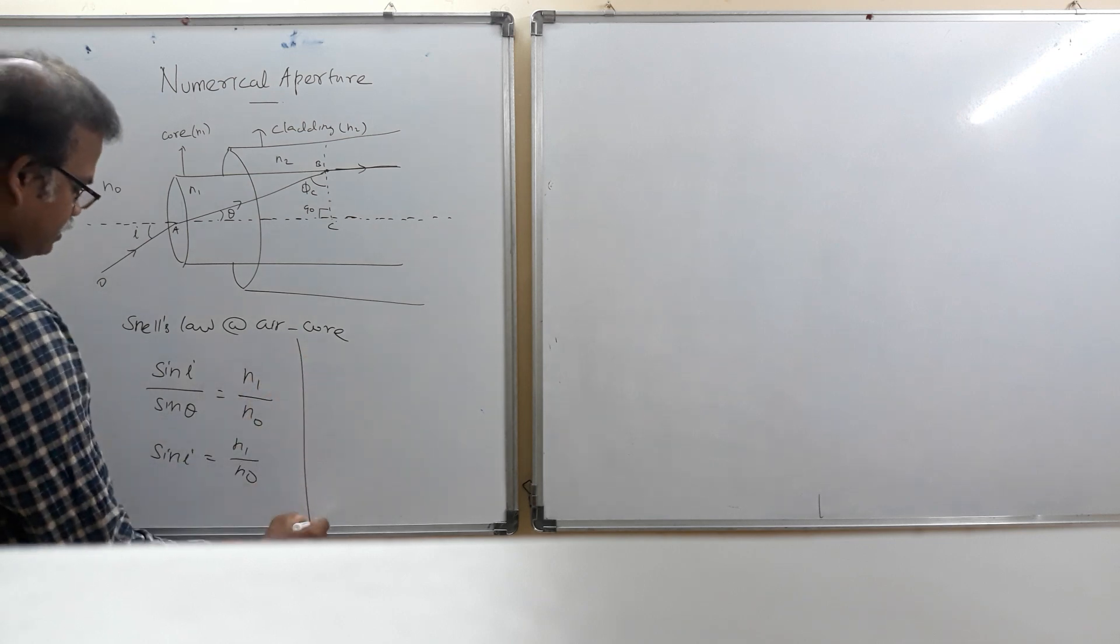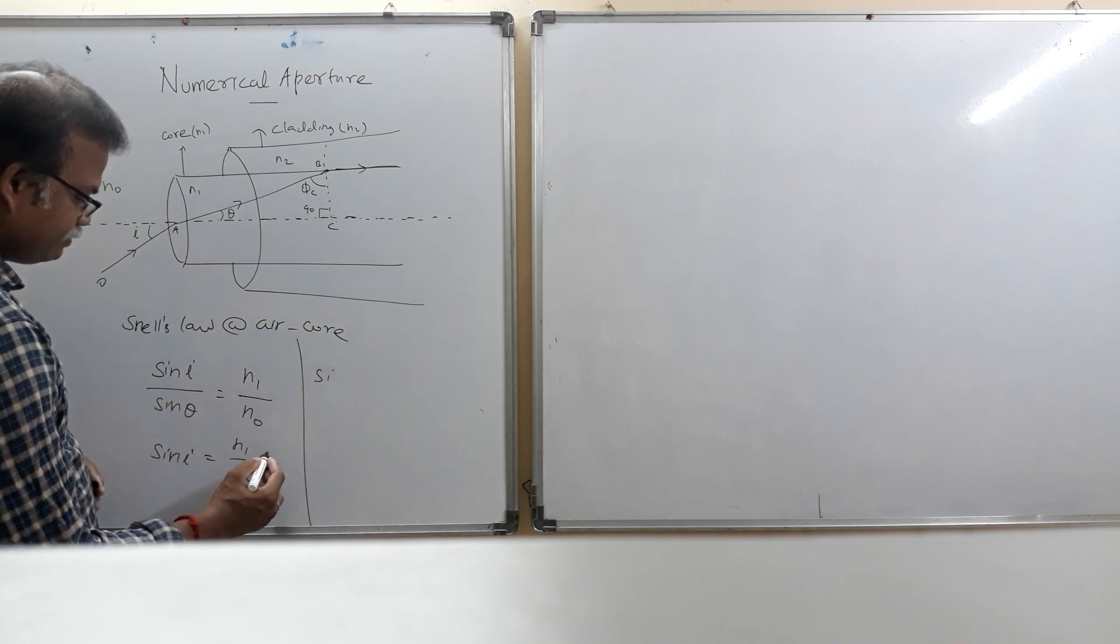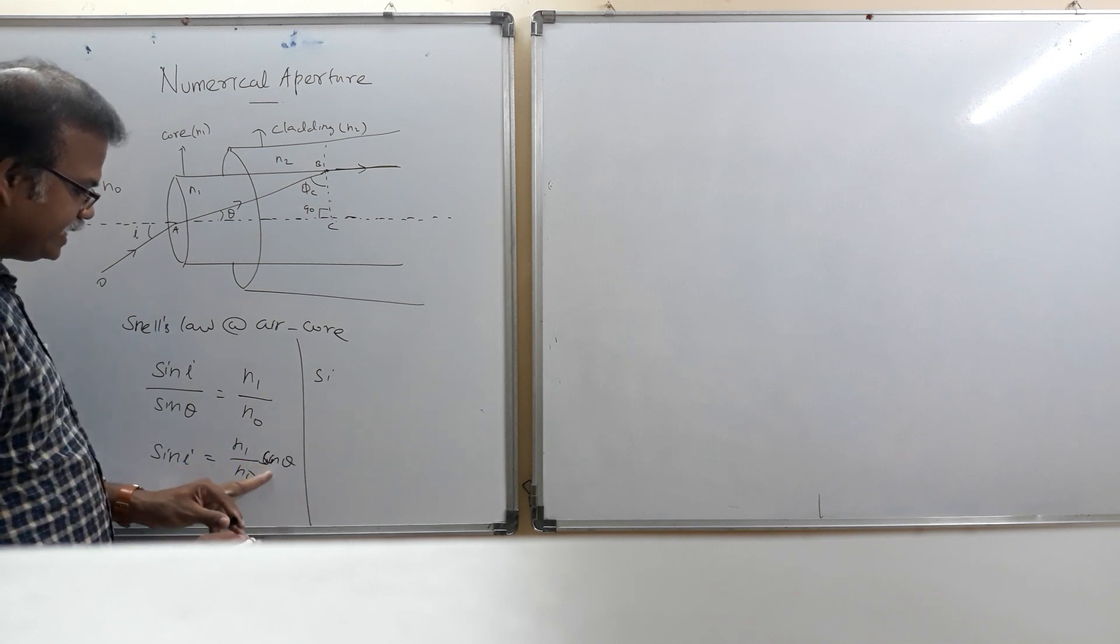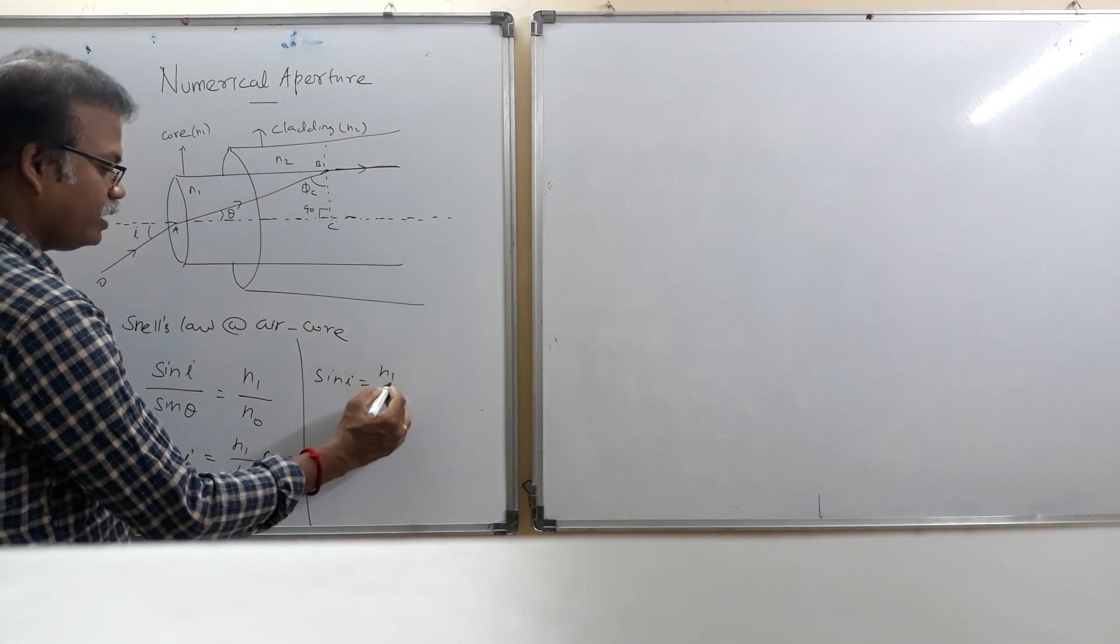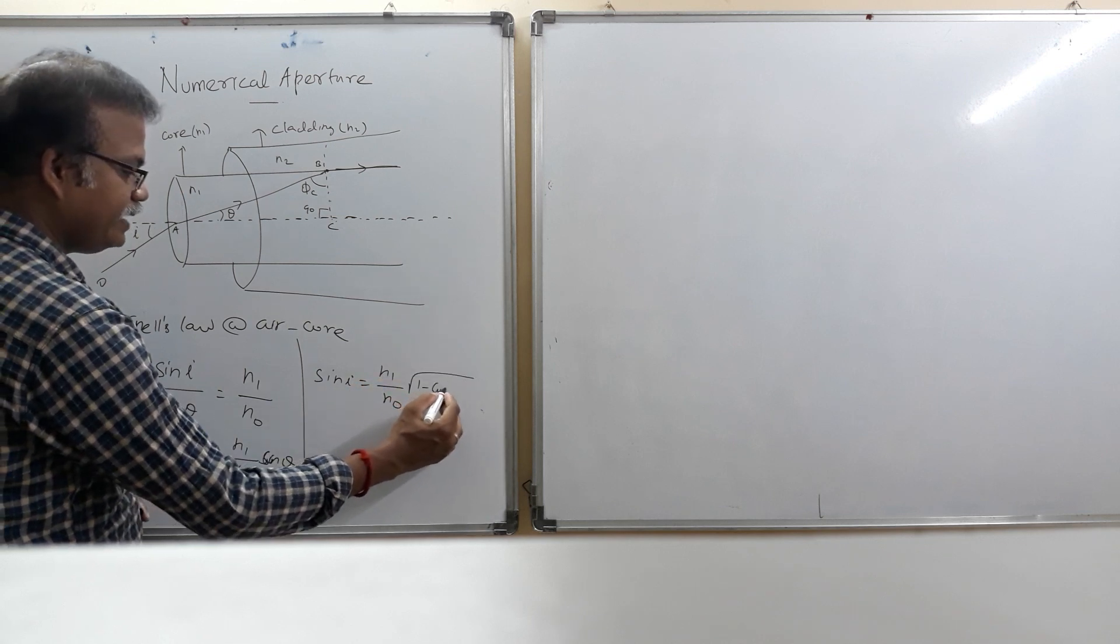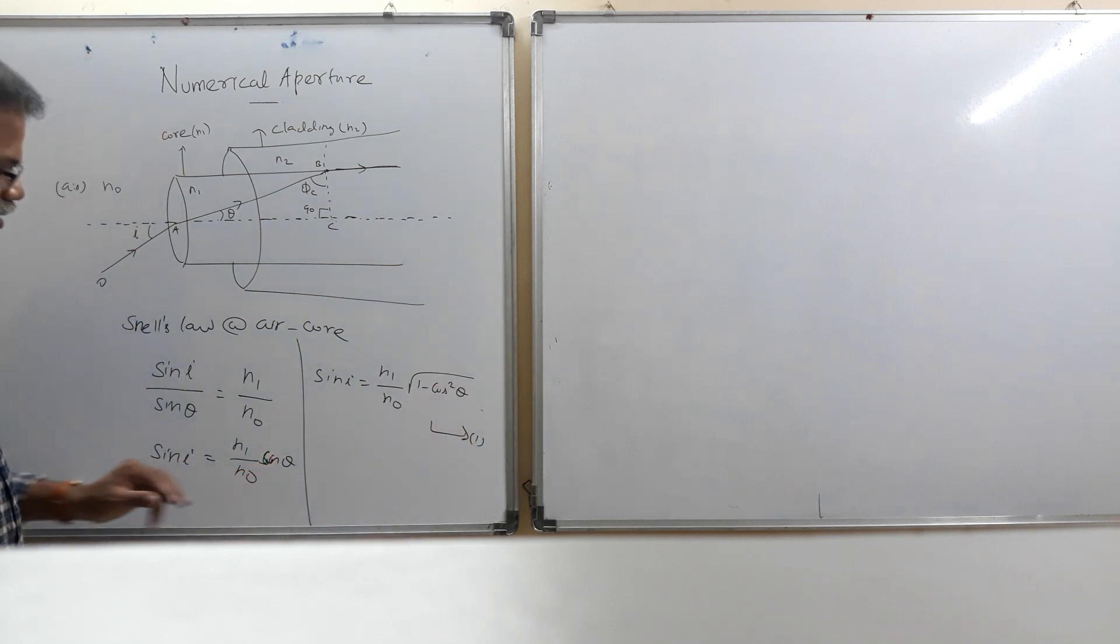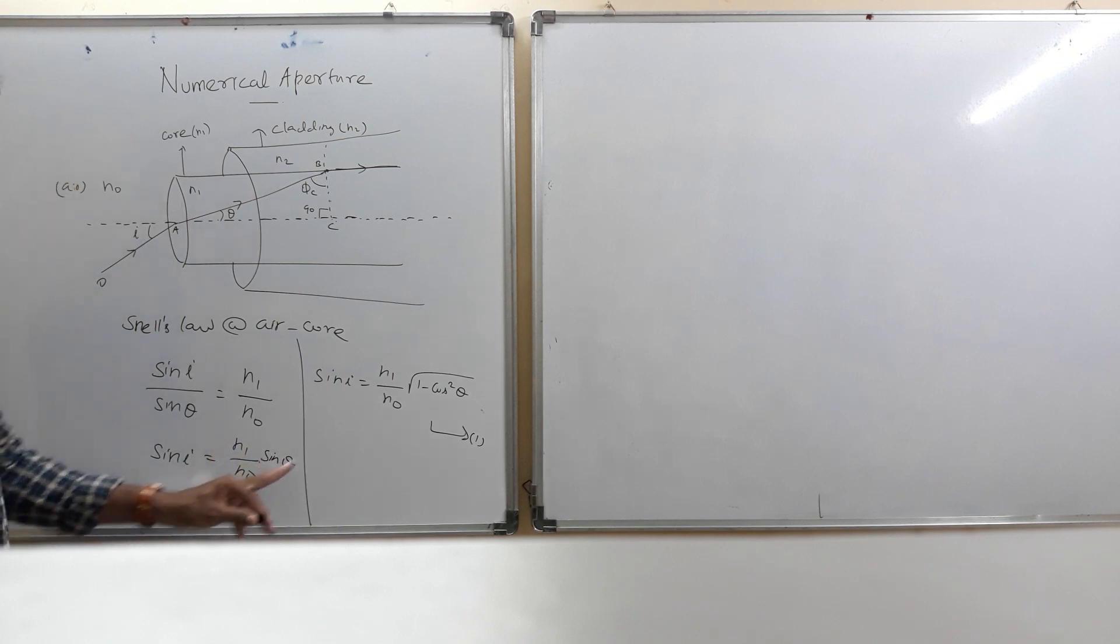So now the sine i, sine theta is multiplied here. So now the sine i becomes N1 by N0 into square root of 1 minus cos square theta. This is equation number 1. The sine theta, it is written in the form of square root of 1 minus cos square theta.